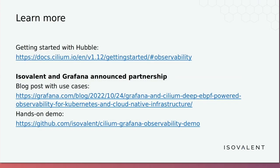To get started with Hubble I would recommend following the tutorials in the Cilium documentation observability section. Isovalent and Grafana announced a partnership today, so if you want to see more use cases for using Hubble and Grafana for debugging various issues including layer 7 issues, there is a blog post available. I encourage you to check it out. Thank you very much.